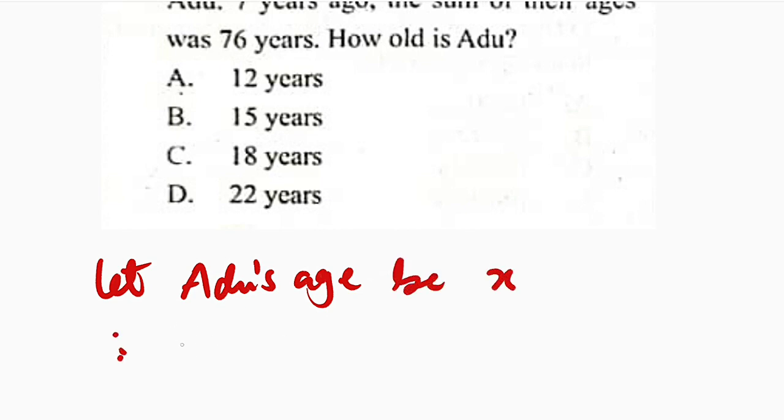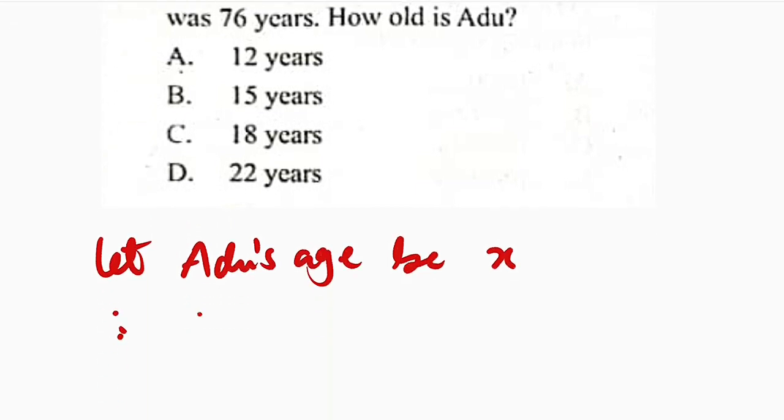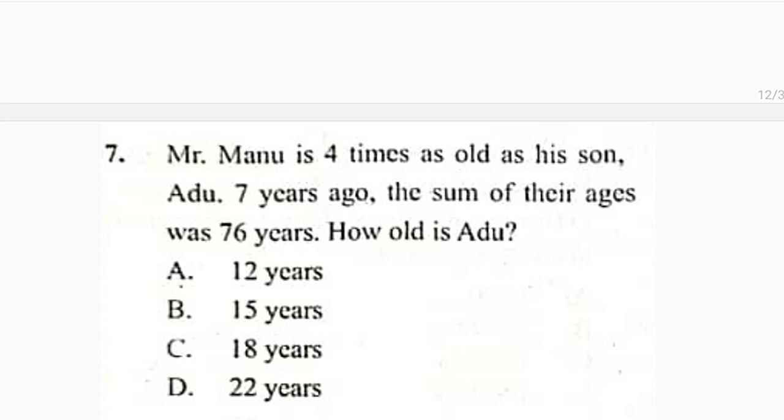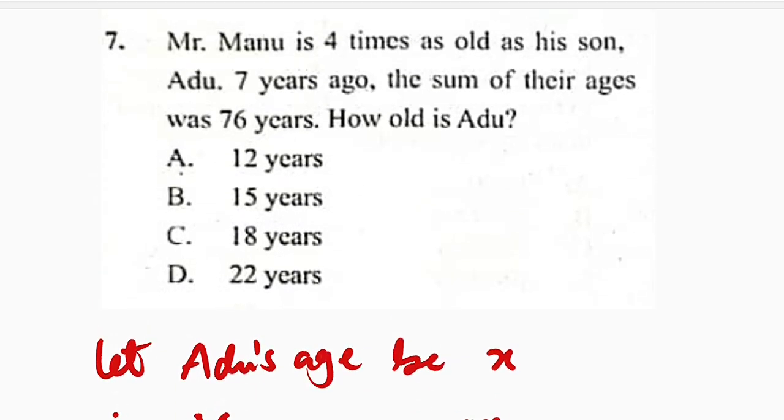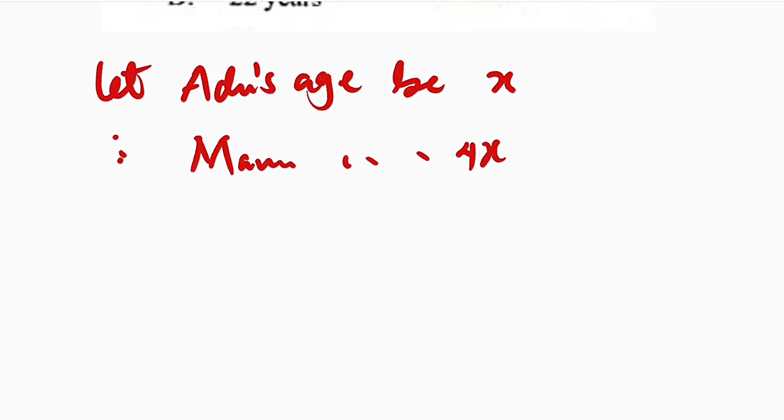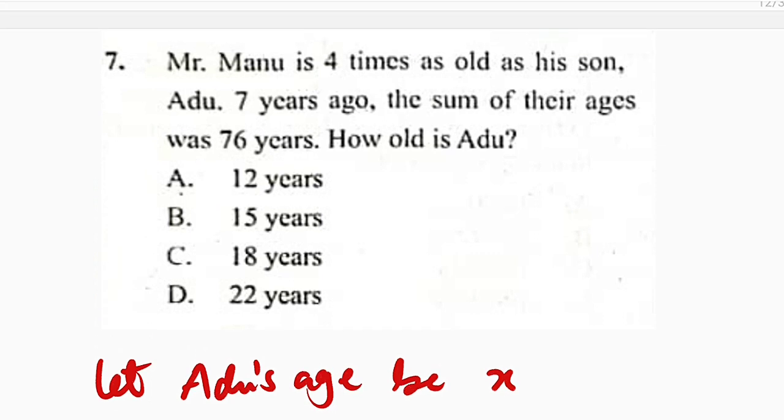Therefore, the father, who is Manu, will be x times 4, which is 4x, because they said he is 4 times as old as the son. And 7 years back, meaning we are going to subtract 7 from each age here. The sum of the ages was 76.